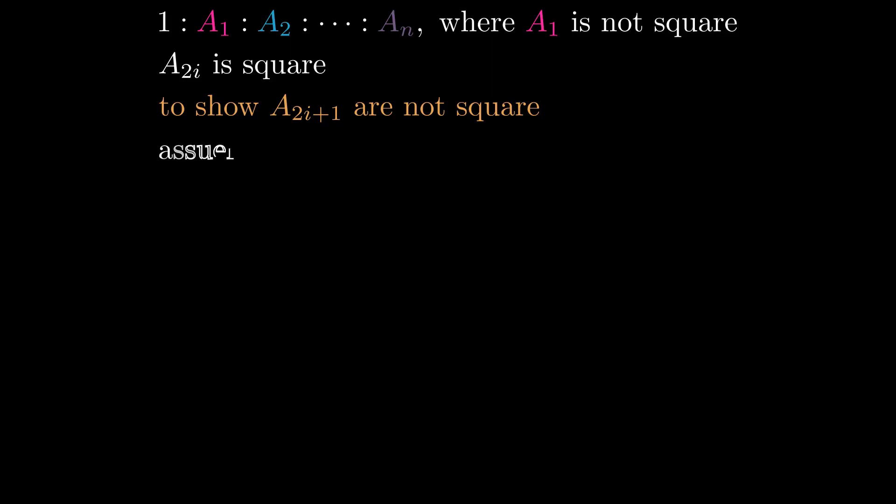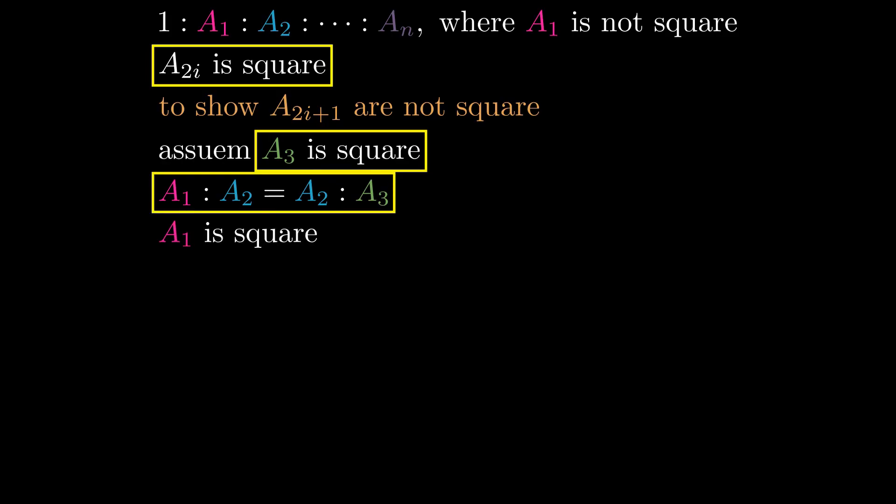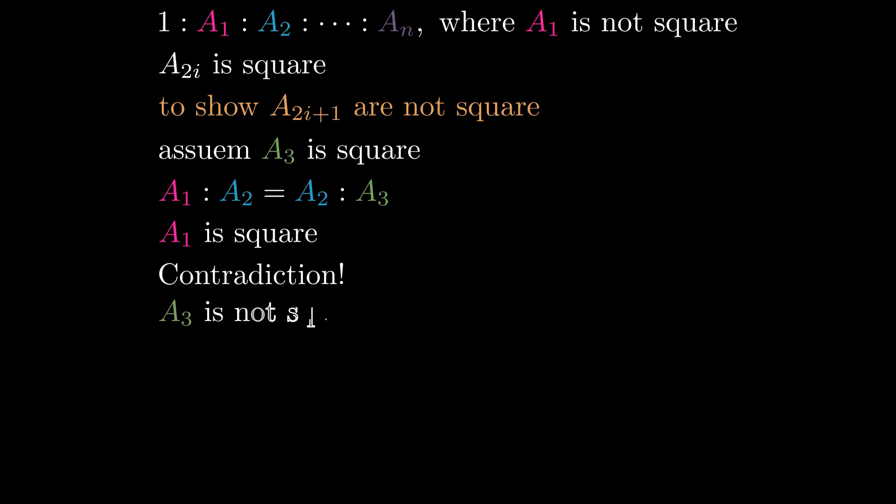Let's assume, by way of contradiction, that A3 is square. A1 to A2 is proportional to A2 to A3. A2 and A3 are square, so A1 is also square, which is a contradiction, so A3 is not square.